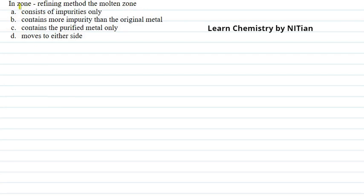The question says: in the zone refining method, the molten zone — option A consists of impurities only; option B contains more impurity than the original metal; option C contains the purified metal only; option D moves to either side. We are asking which option is correct for what the molten zone is in the zone refining method.